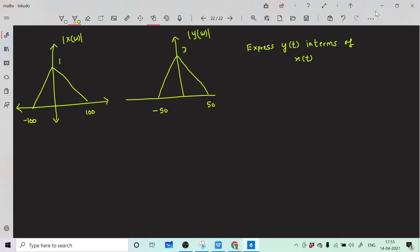You can see that in the frequency domain there is frequency compression. Initially the spectral width was 200, now the spectral width is 100. This compression means there is expansion in the time domain.